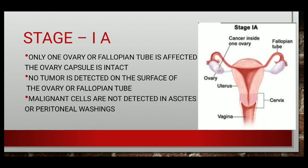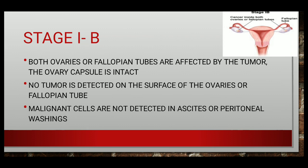In stage 1b, both ovaries or fallopian tubes are affected by the tumors. The ovary capsule is intact. In 1a we had only one side, whereas in 1b both tubes or ovaries are affected by the tumor. The ovary capsule is still intact, no tumor is detected on the surface, and malignant cells are not detected in ascites or peritoneal washing.